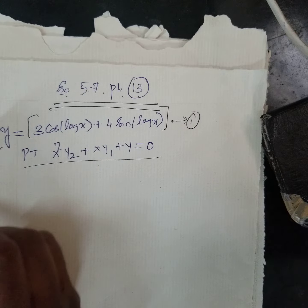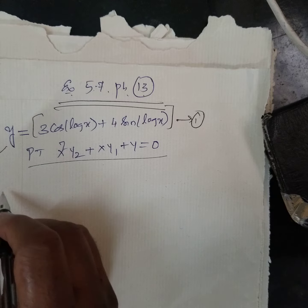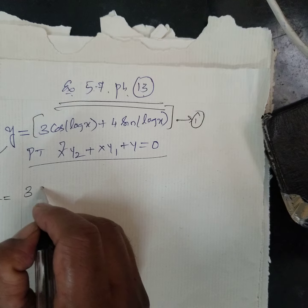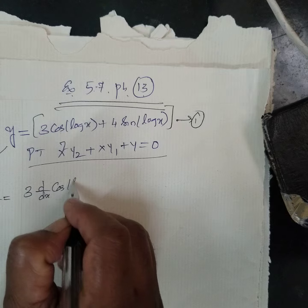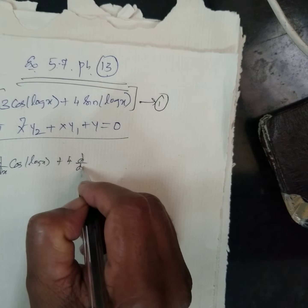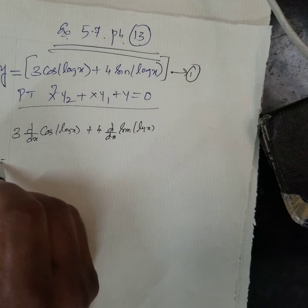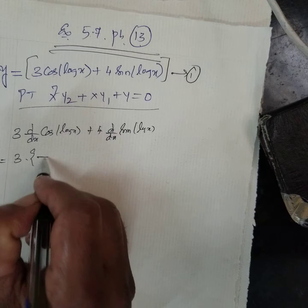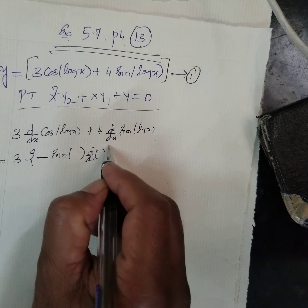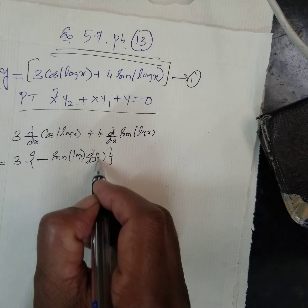Now, suppose y1, y1 is equal to dy over dx, differential coefficient of is what, 3 cos box is what, d by dx of cos log x plus 4 d by dx of sin log x. That is equal to 3, differential coefficient of cos is what, minus sin box into differential coefficient of that box, this part. Box consists of log x.